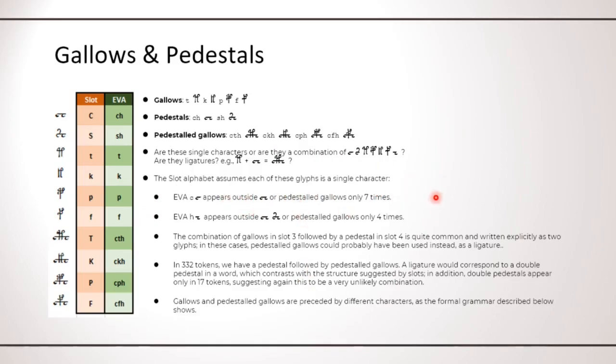So C and H appear outside the pedestal or pedestal gallows only 11 times. The combination of gallows in slot 3 followed by a pedestal in slot 4 is quite common and is written explicitly as two glyphs. In these cases, pedestal gallows should have been used instead if they were a ligature of these two symbols. In about 300 tokens, we have a pedestal followed by a pedestal gallows. A ligature, in this case, will correspond to a double pedestal in a word, which contrasts with the structure suggested by slots. In addition, double pedestals appear only in 17 tokens, suggesting again this is a very unlikely combination.